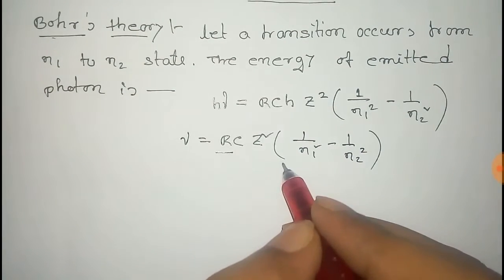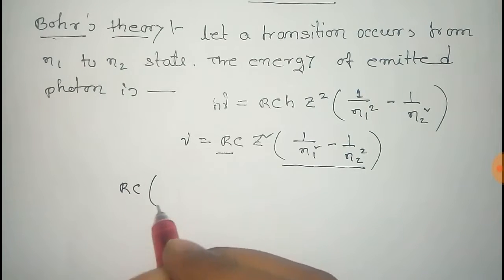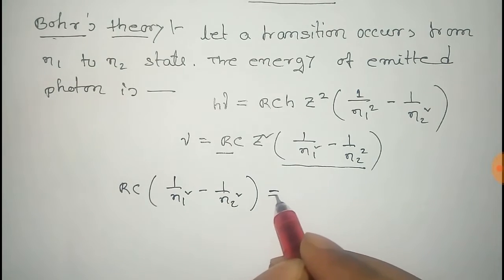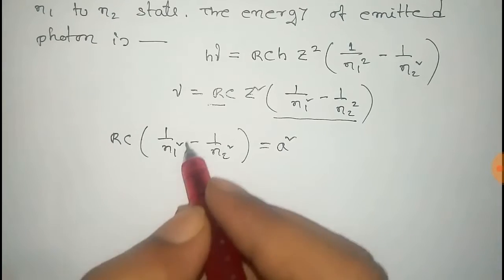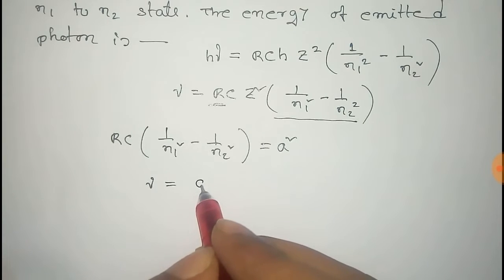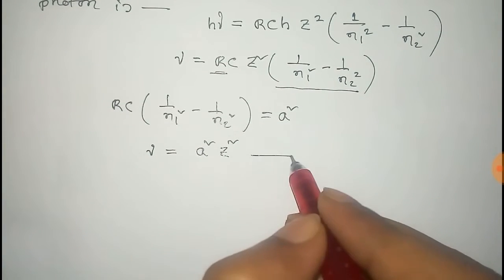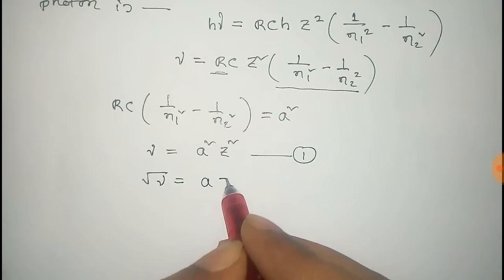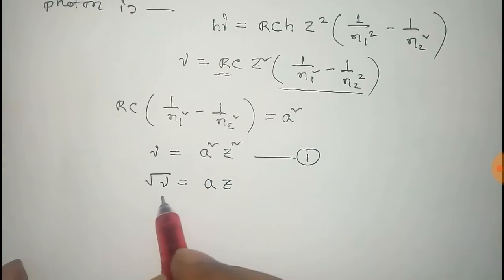We take the constant term Rc multiplied by (1/n1² − 1/n2²) as a new constant a². Substituting, the relation becomes ν = a²Z², and from this we get: root of ν = a × Z. This is equation number one.